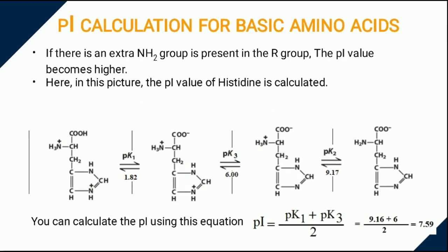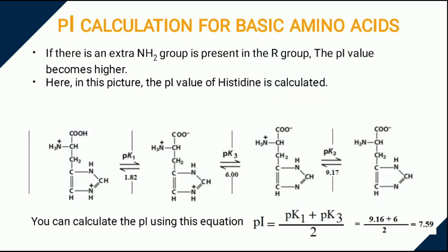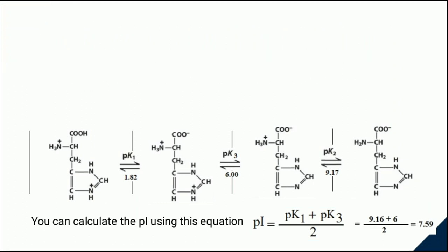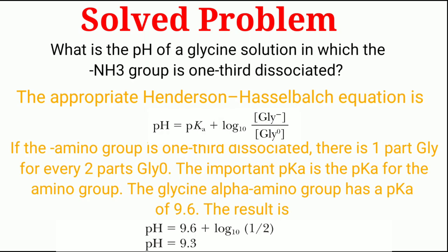If there is an extra basic group in the R side chain like histidine, PI increased and shifted towards the basic pH. Now I have solved one problems that appeared in the JAM exam. You can pause the video to watch how I solve this problem. Here is an another solved problem for practice.